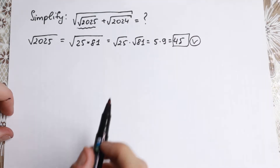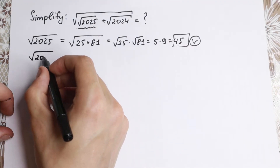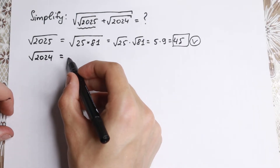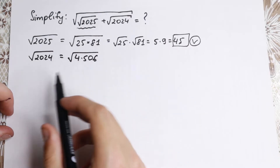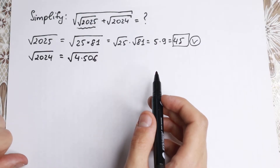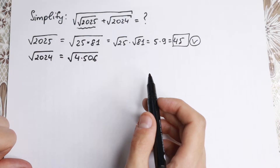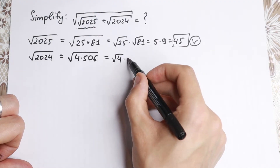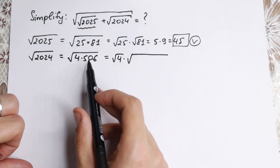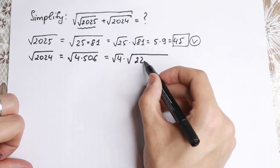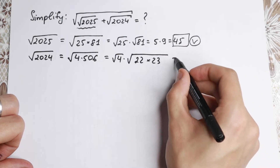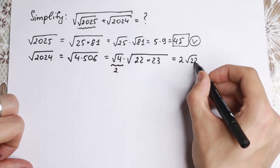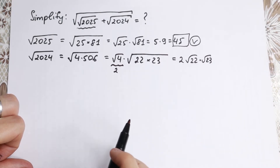Let's go further and simplify the square root of 2024. How can we simplify 2024? We can write it as the square root of 4 times 506. Let's simplify this a little bit — 506 we can write as 22 times 23. So the final answer will be: the square root of 4 equals 2, so we have 2 times the square root of 22 times the square root of 23, and this is the maximum simplification.